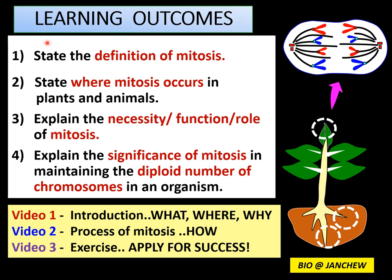Let's look at the learning outcomes. After this video lesson, you should be able to state the definition of mitosis — please memorize the definition. Number 2, state where mitosis occurs in plants and animals, the location of mitosis in the body of animals and plants. Number 3, explain the necessity, function or role of mitosis — why is mitosis important and why must organisms carry out mitosis?